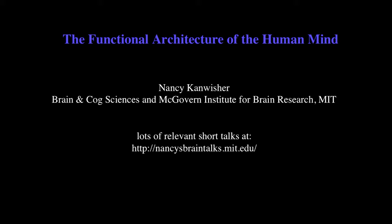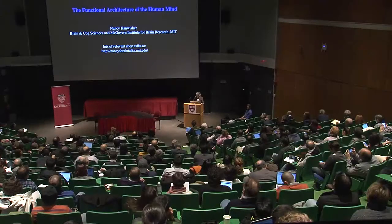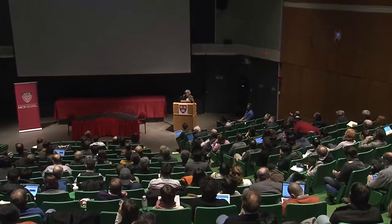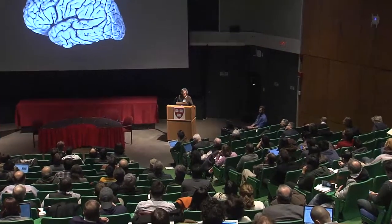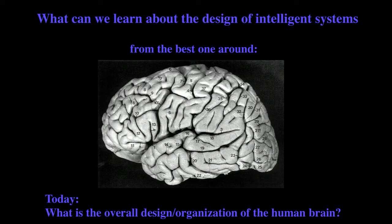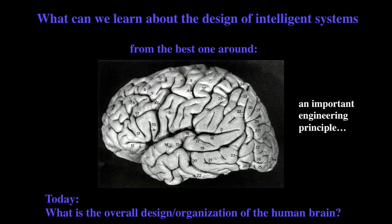We've been hearing a lot today about how we might reverse engineer the human brain and some of the difficulties in trying to do that. I want to follow that thread by saying, let's consider what we can learn about the design of intelligent systems by looking at the best one around — this one. I'm going to look at it at a very different scale and ask what is the overall macroscopic organization or design of the human brain. I want to start by mentioning an important engineering principle offered by the late and great David Marr, who bridged computer science and neuroscience long before other people knew that was a trendy thing to do. Marr wrote about something he called the principle of modular design.